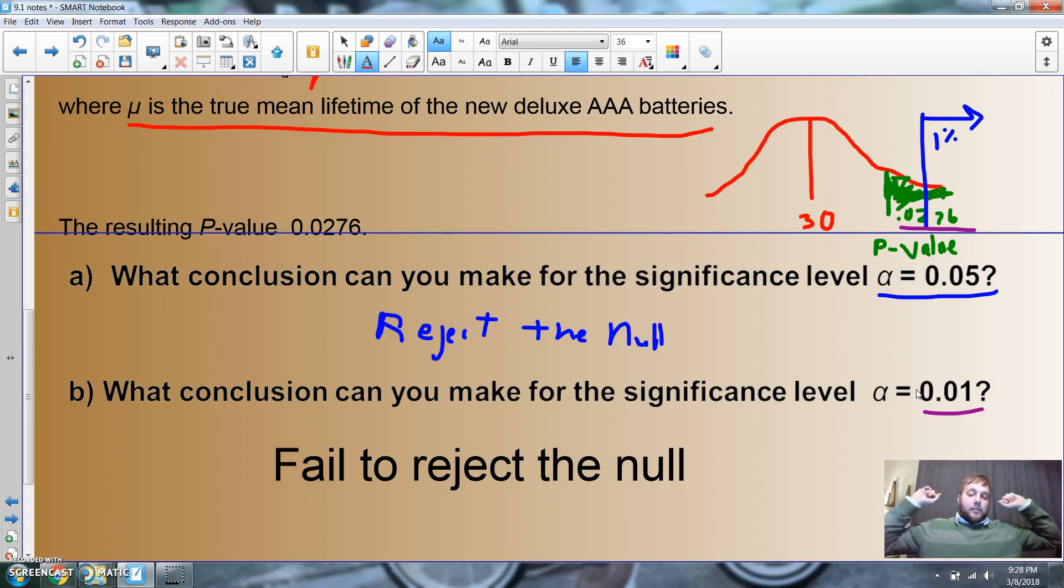Depending on where we set that level - we should set it before we do things and say I'm going to reject it if it's five percent or less probability. If it was set at five percent we would have rejected it. If we set it at one percent we would fail to reject. It makes all the difference where we put that line. Lucky for you, it's written in story problems of where we're going to draw the line.